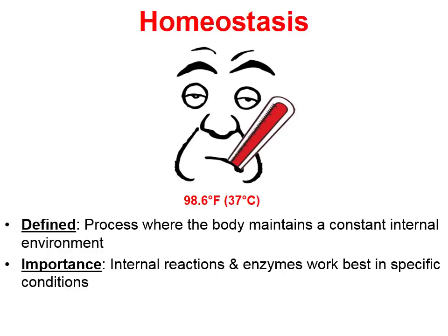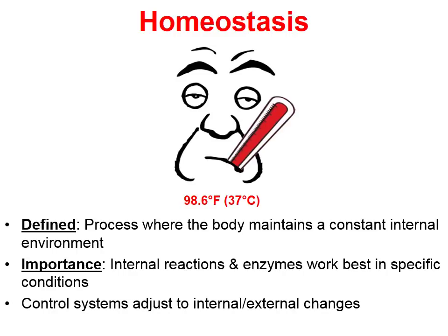The chemical reactions happening right now all take place in a 98.6 degree body — or a 37 degrees Celsius body. And if our body temperature gets too high or too low, many of those internal chemical reactions do not proceed as effectively or as efficiently as they should.